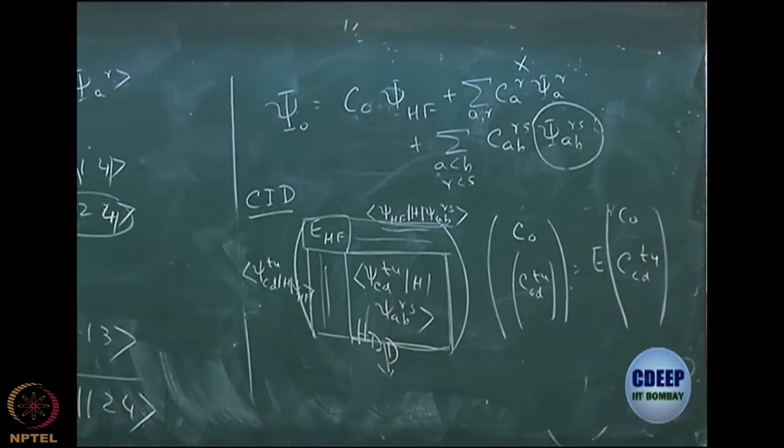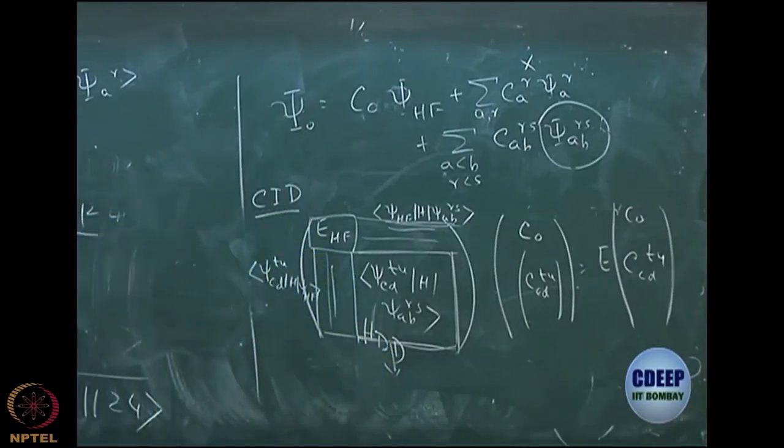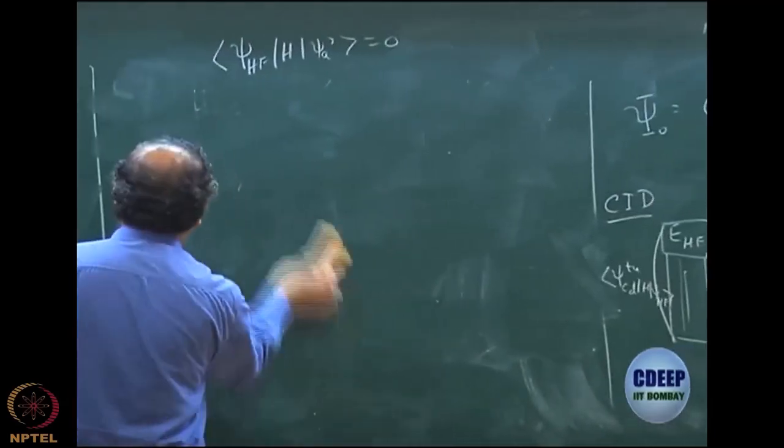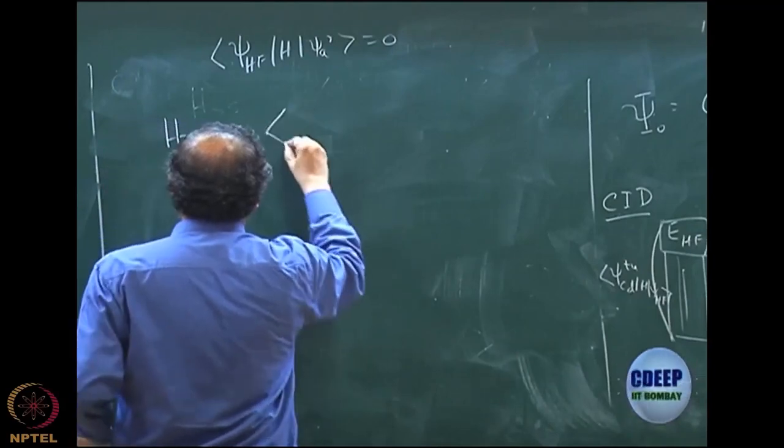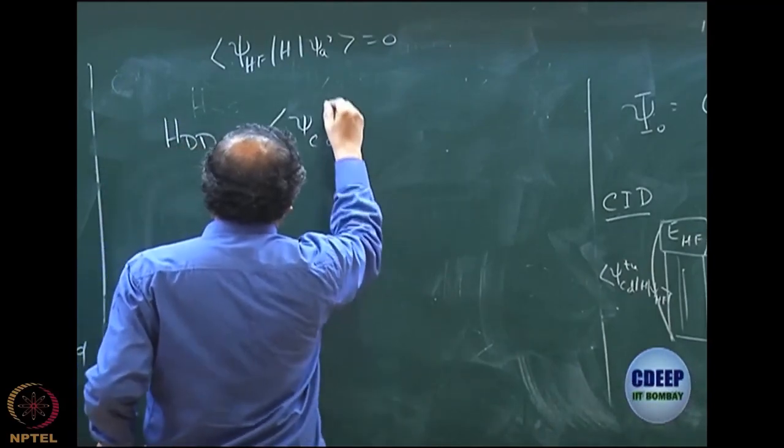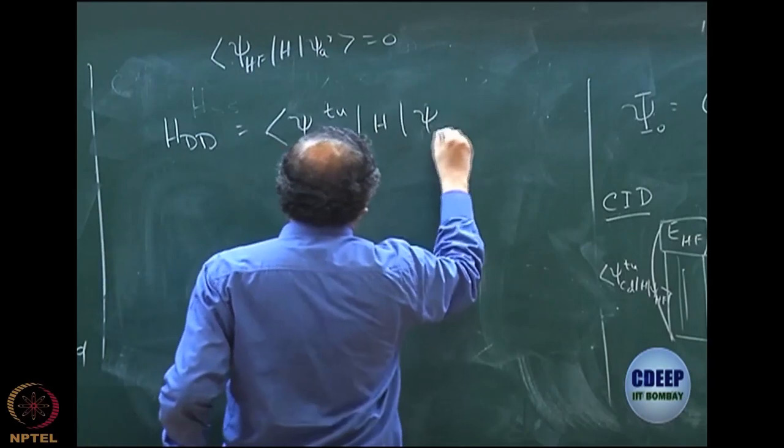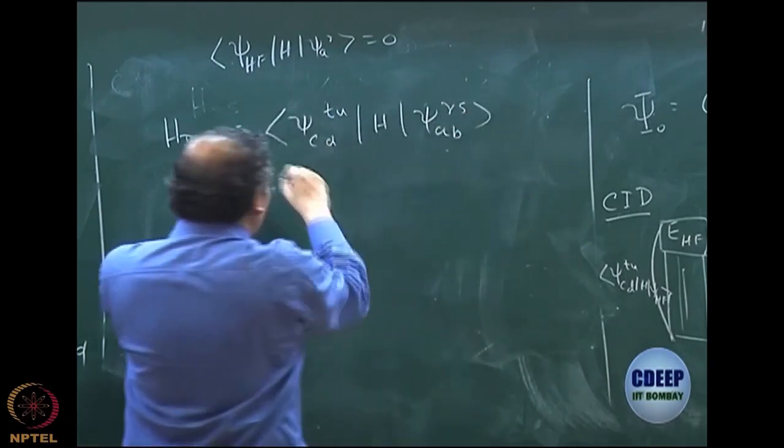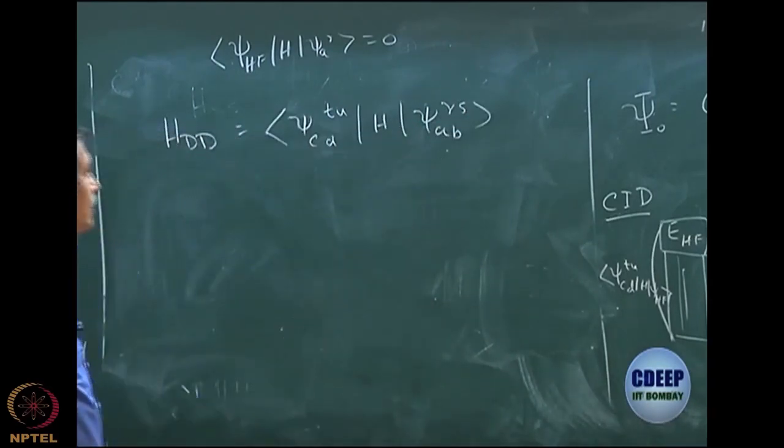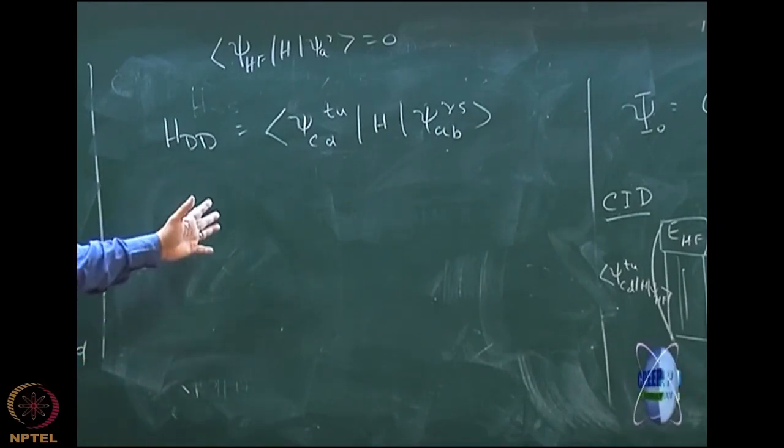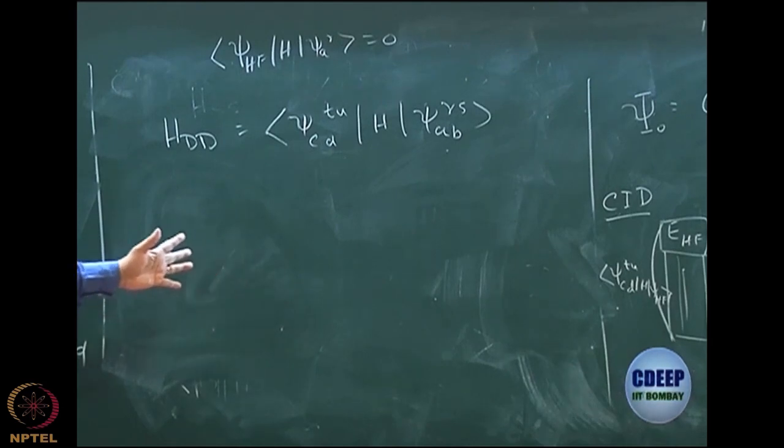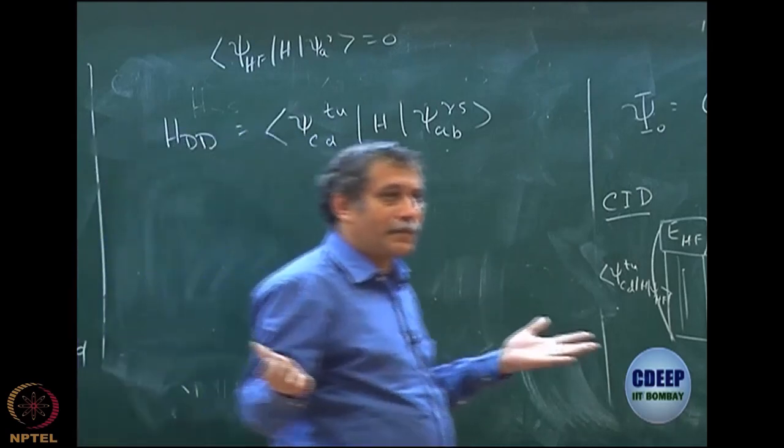Now again you have to use Slater rule for each of them. So this is of course quite clear, you will be using only Slater rule C. But this block, this small block which I am now calling HDD just in this terminology of HSS is the doubles into doubles. So let us look at this block a little bit more carefully. So I have H doubles into doubles, which is psi CDTU. So one of the double excited determinants H with another double excited. Now you can see even by Slater rule, lot of integrals will vanish.